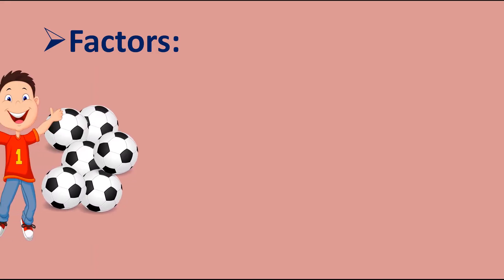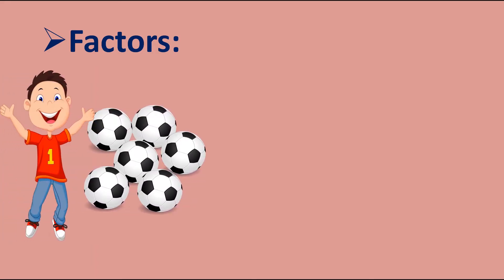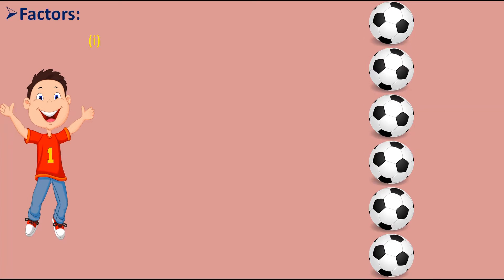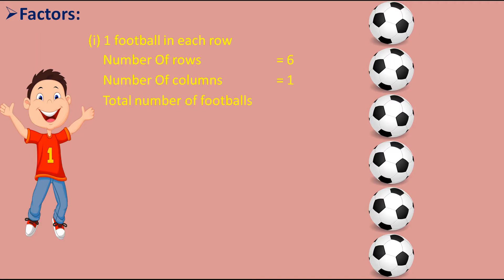This boy has six balls with him and he wants to arrange these balls in rows and columns so that he will be able to write the number of footballs as a product of two numbers. First he tried to keep one football in each row, so the number of rows became six and the number of columns is only one. So he wrote the total number of footballs as 6 × 1 = 6.